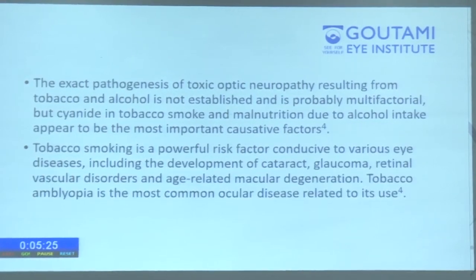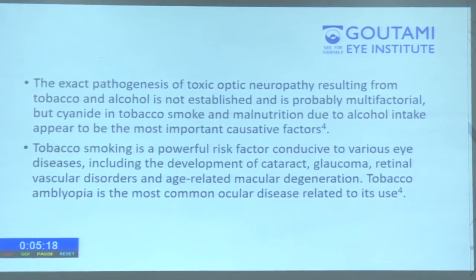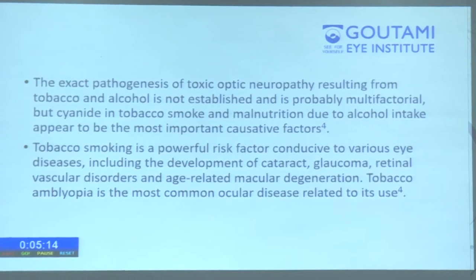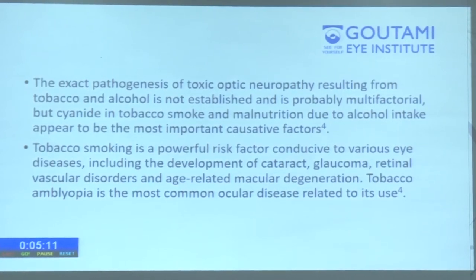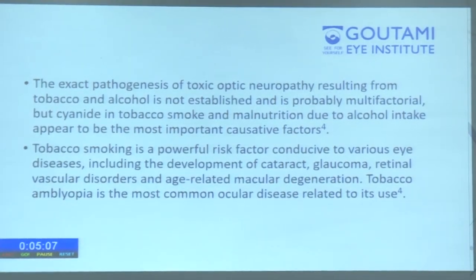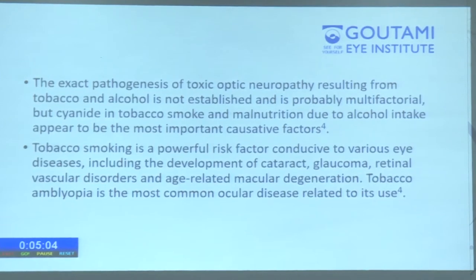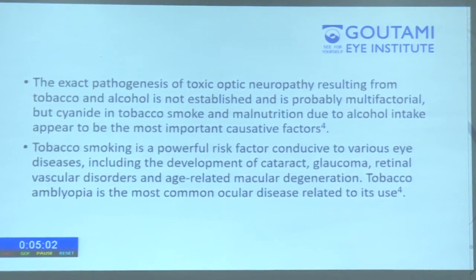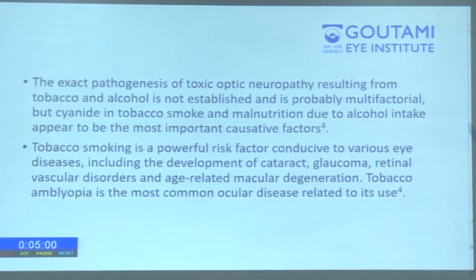The exact pathogenesis of toxic optic neuropathy resulting from tobacco and alcohol is not established and is probably multifactorial, but cyanide in tobacco smoke and malnutrition due to alcohol intake appear to be the most important causative factors. Tobacco smoking is a powerful risk factor conducive to various eye diseases including cataract, glaucoma, retinal vascular disorders, and age-related macular degeneration.